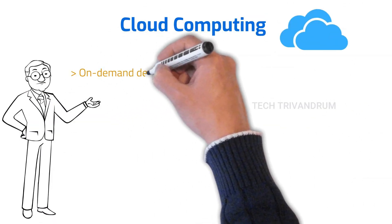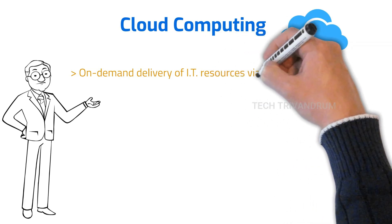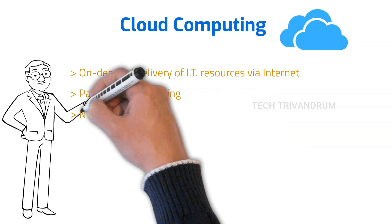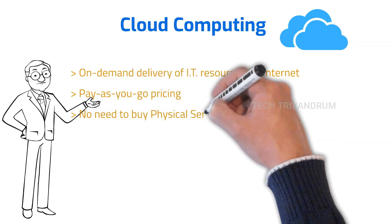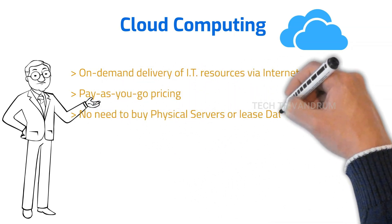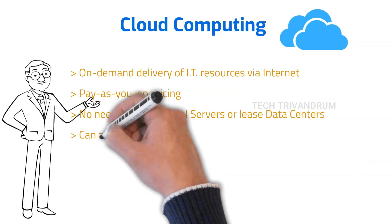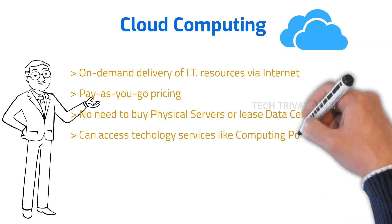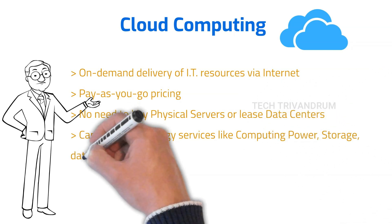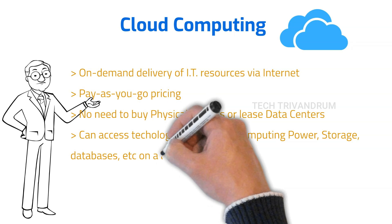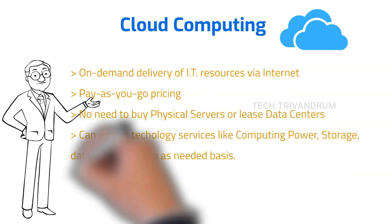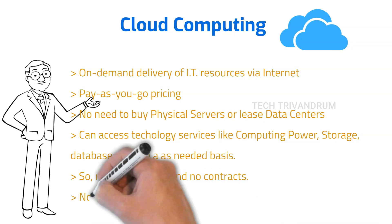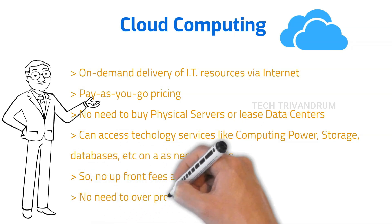So Jeff started to explain about cloud computing to Adam. It is an on-demand delivery of IT resources over the internet, and it's a pay-as-you-go pricing model — meaning pay only for what you use. There is no need to buy any physical servers or lease data centers of your own. You can access technology services like computing power, storage, databases, etc. on an as-needed basis. There are no upfront fees or any contracts, and no need to over-provision resources to handle peak levels in the future. That is the most important thing when we use cloud computing.